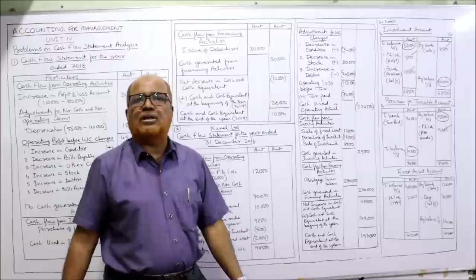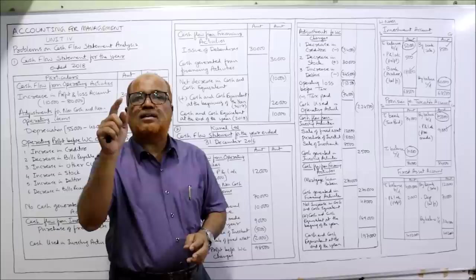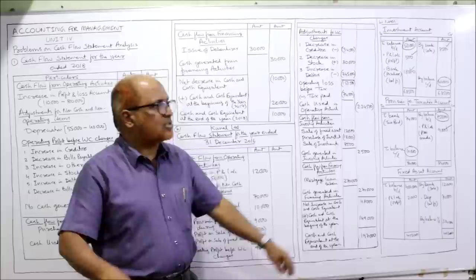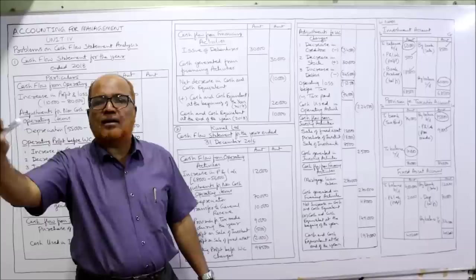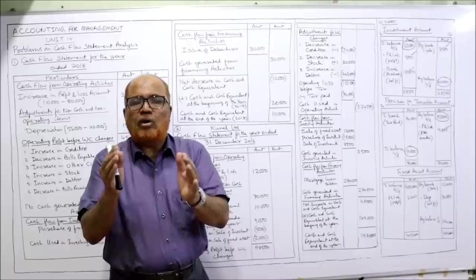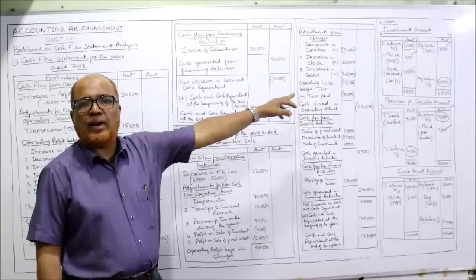From 84,000 deduct closing balance 10,000: 84,000 minus 10,000 equals 74,000 — this is the tax paid during the year, not given in the problem. By making this account we find out there is a payment of tax of 74,000. Entry: provision for taxation account debit, bank account credit. So debit side: to bank — tax paid 74,000. In the cash flow statement, tax paid 74,000 will be deducted in operating activities — cash outflow, in bracket.